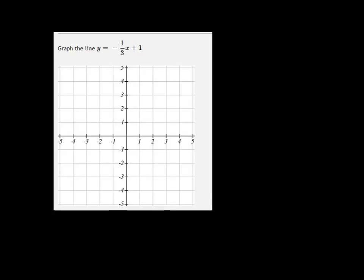Alright, we're trying to graph the line y = negative one-third x plus one. So the way I like to do it is to point out what the y-intercept is. And in this case, it's the one.